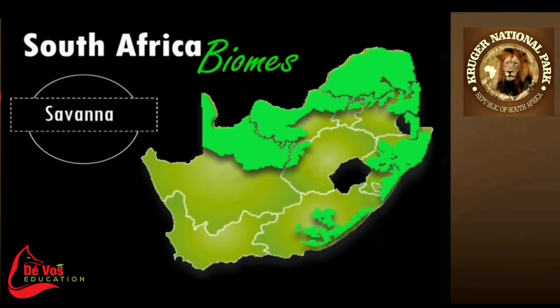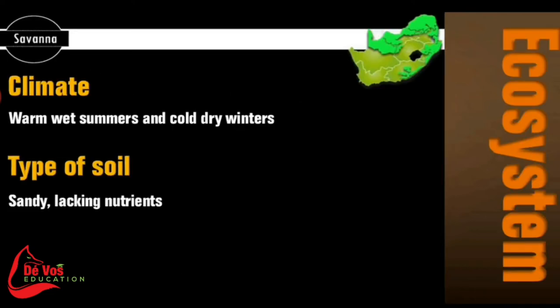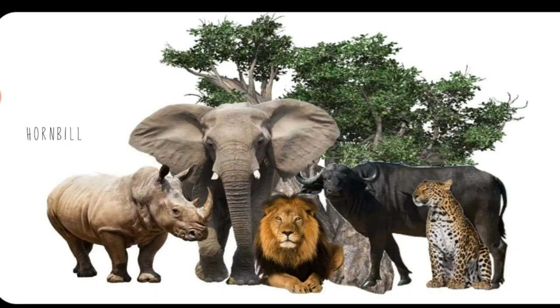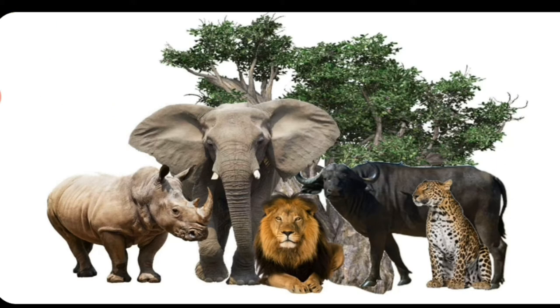The savannah biome stretches from the Kalahari in the north west to the lowveld in the north east and southward to the low-lying areas of KwaZulu-Natal and the Eastern Cape. The summer rainfall area has extremely hot temperatures in summer and cold winters with little to no rain. The infertile porous soil allows water to drain away, causing it to lack nutrients. The predominant vegetation is grasses and trees, including Baobab, Mopani, Camelthorn and Monkeythorn. Frequent veld fires prevent the trees from dominating and encourage the germination of seeds.